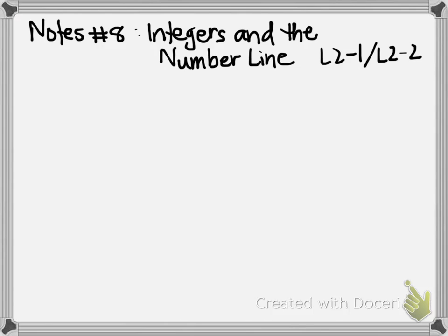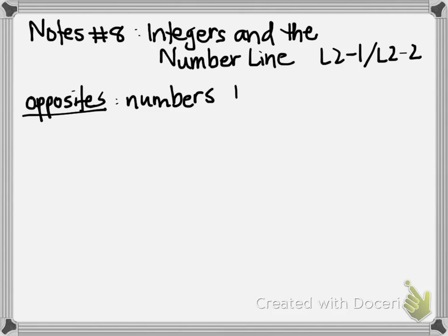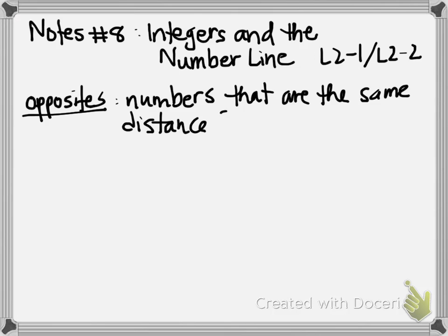We're going to talk about lots of different numbers and categories that they're in. As we're in new chapters, usually the first couple of lessons have more vocabulary than the rest of them. So we're going to start today by giving you some definitions, and then how we would see that word or idea played out in homework. We're going to start with the word opposites, and opposites are numbers that are the same distance from zero, but on opposite sides.